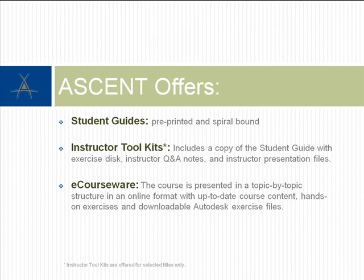When you purchase courseware from Ascent, you have the following options: student guides, which will arrive pre-printed and spiral-bound for your convenience; instructor toolkits, ideal if you are teaching the course — with this option, receive a copy of the student guide with an exercise disc, instructor question and answer notes, and instructor presentation files, which include timing suggestions for delivery of the course.